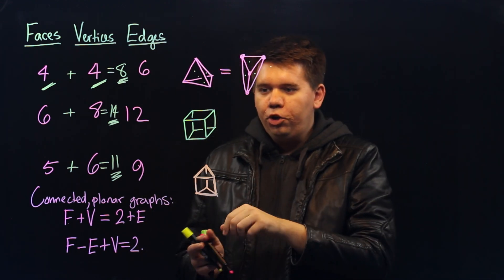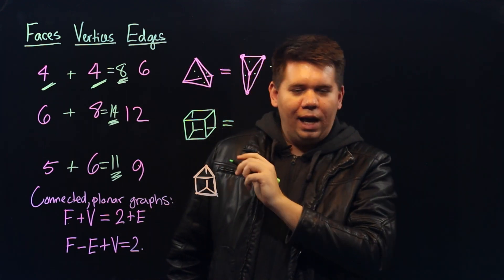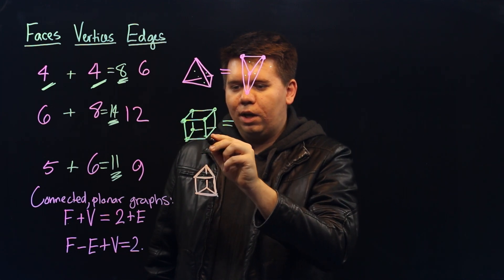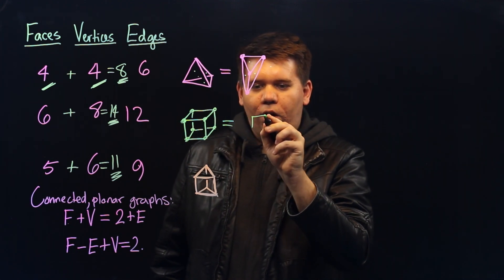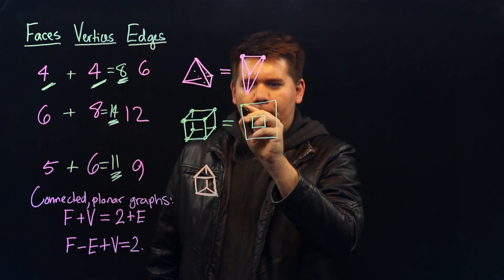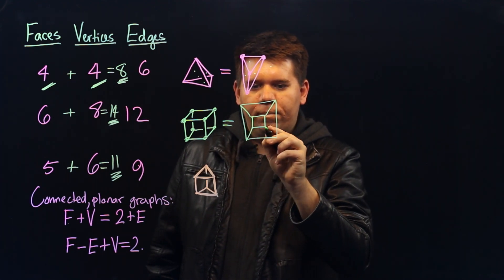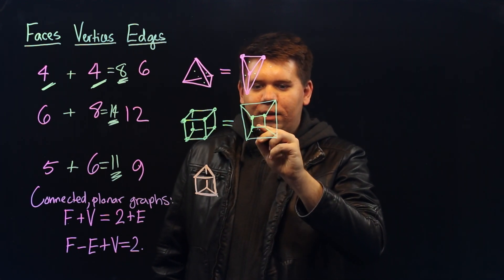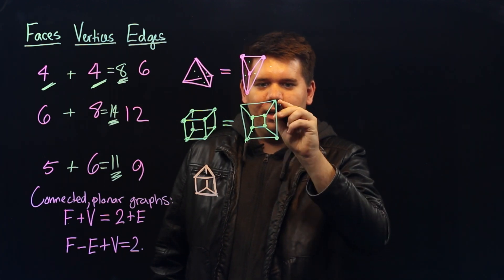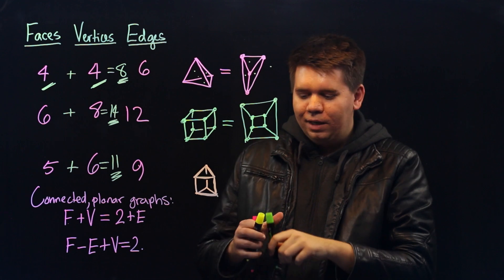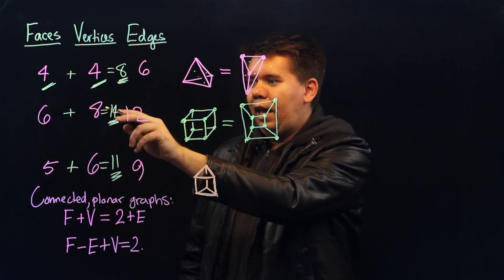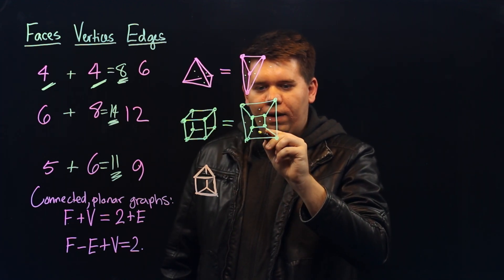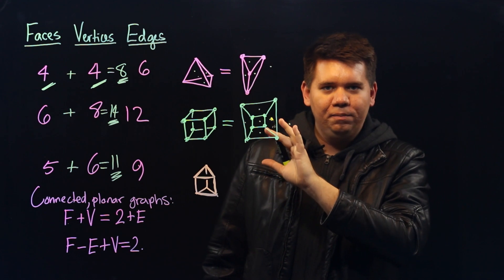We can similarly represent the cube as a planar graph. We want to redraw it so that none of the edges cross each other. One way to do that is to draw it like this. You can think of smashing the cube down onto a table so that the bottom collapses out under it, and you will get an image like this — a planar graph that again has 12 edges, eight vertices, and six faces: 1, 2, 3, 4, 5 in the outside region to comprise six faces.